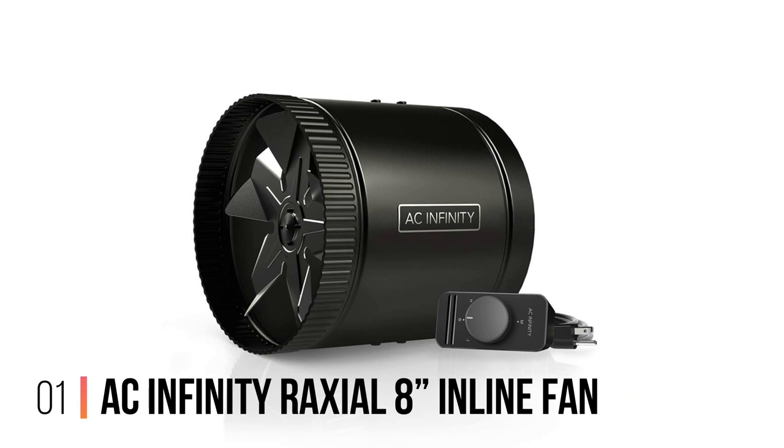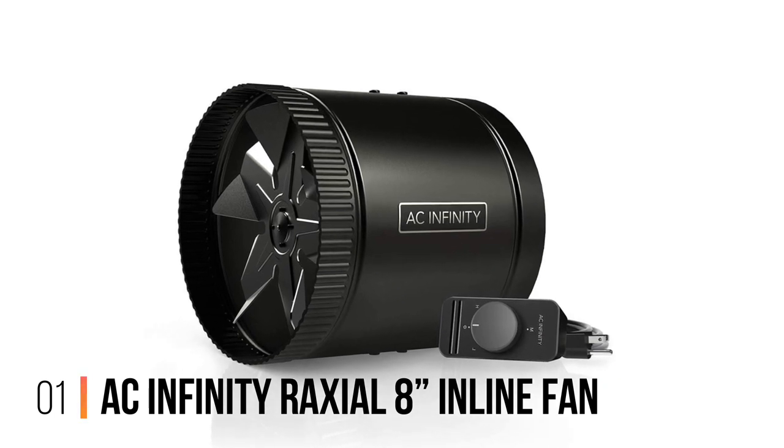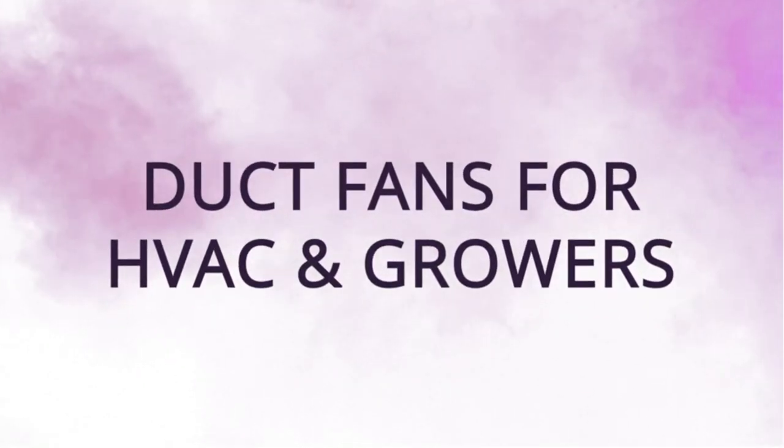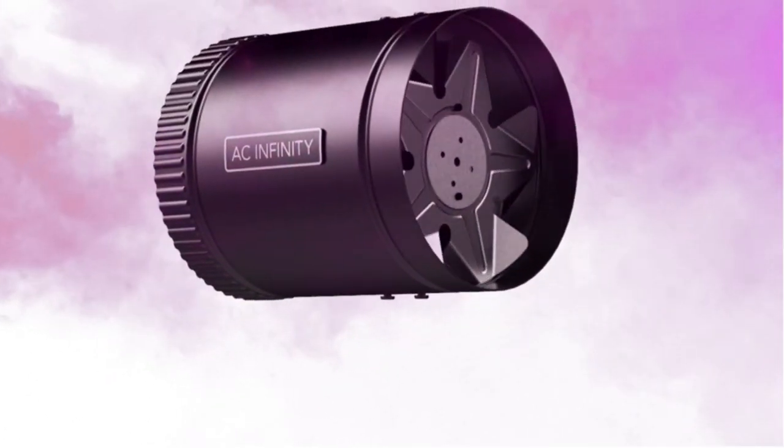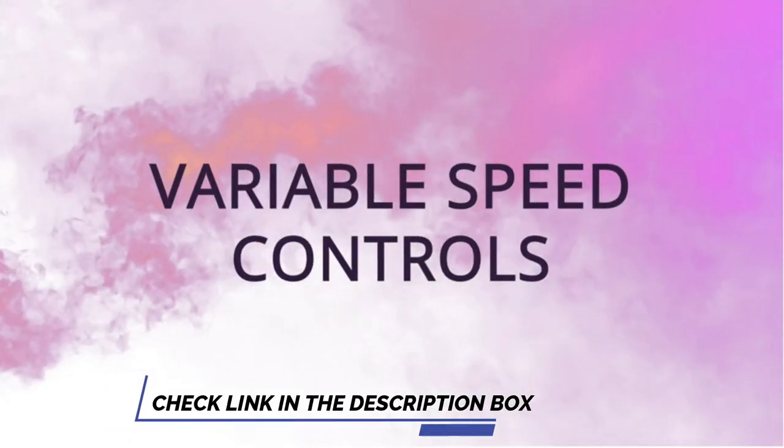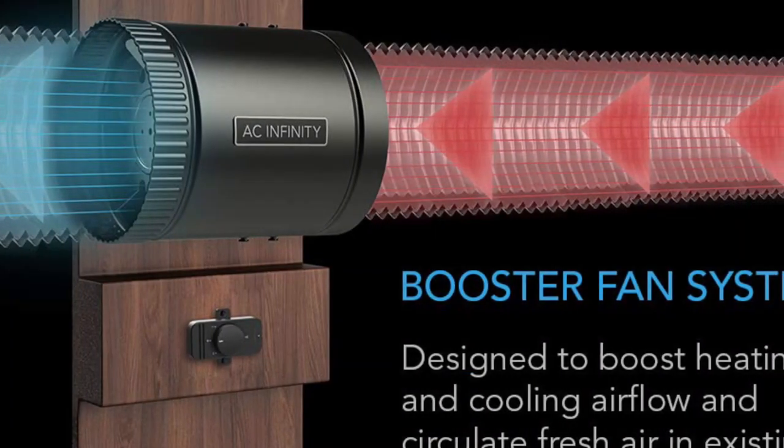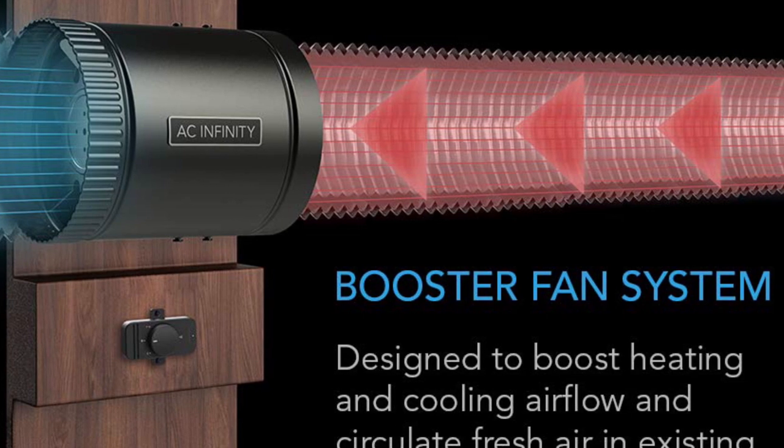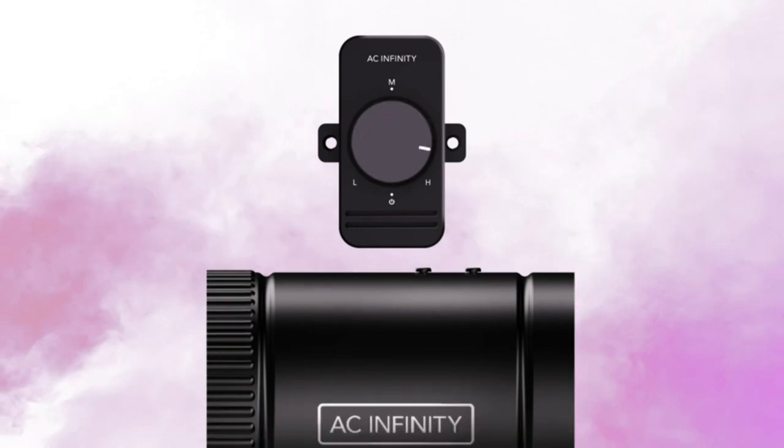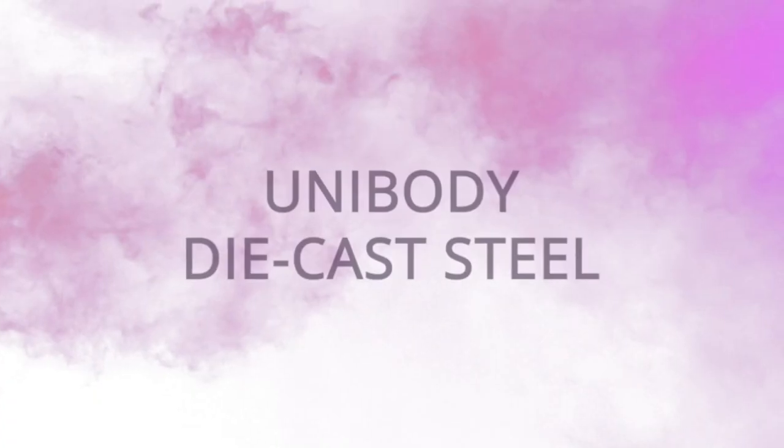Number 1, AC Infinity Raxial 8 Inches Inline Fan. This inline fan integrates easily into existing HVAC ductwork to improve air circulation. It's particularly suited for kitchens because this 8 inches inline fan has a CFM of 428. It can move air quickly, helping to remove steam and cooking smells with ease. It has a noise level of 43 decibels, which is the equivalent of a quiet refrigerator.